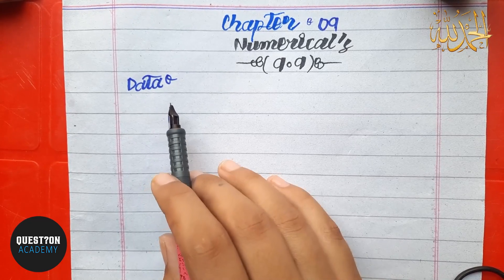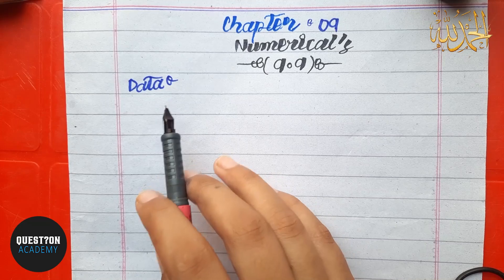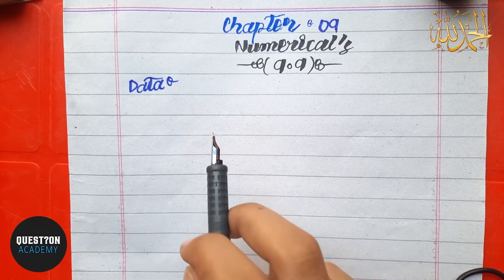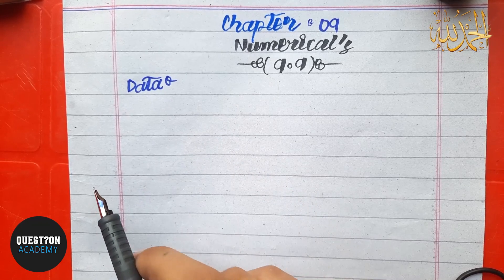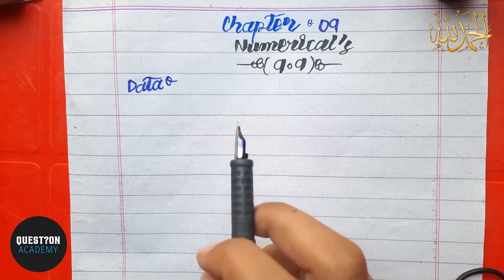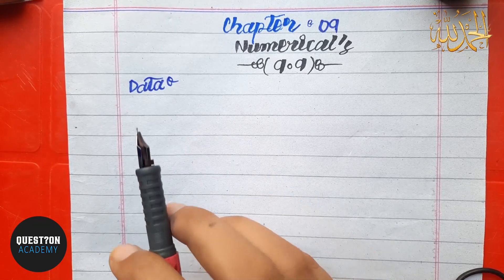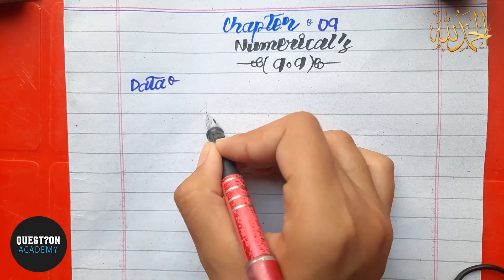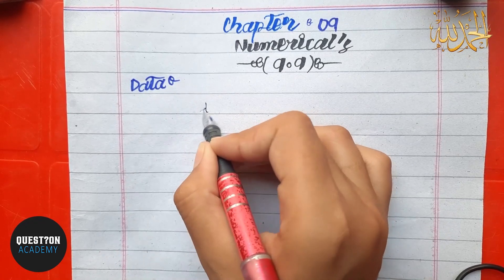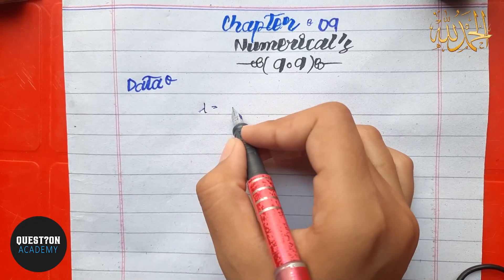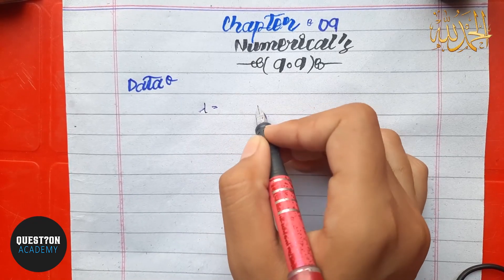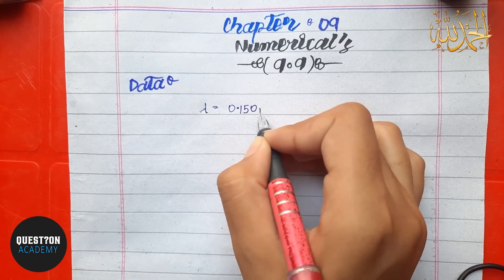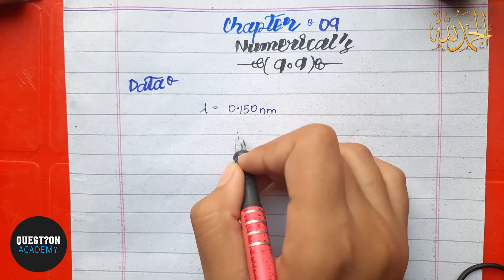So what data do we have? The wavelength of X-rays — what is the value? We have wavelength lambda equal to 0.150 nanometer.